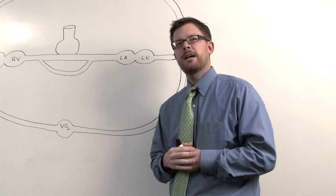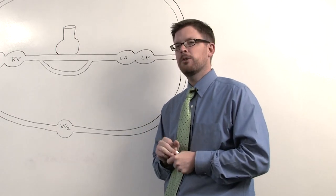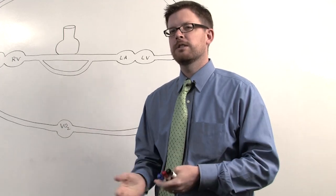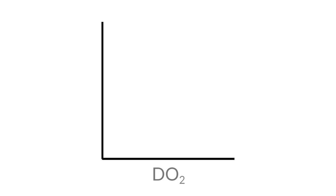The majority of patients that we see in the intensive care unit can be simplified to oxygen delivery versus oxygen consumption. Let's start with a graph. The majority of what we do in the pediatric intensive care unit revolves around this graph, where on the x-axis we have delivery of oxygen denoted by DO2, and on the y-axis we have consumption of oxygen denoted by VO2.